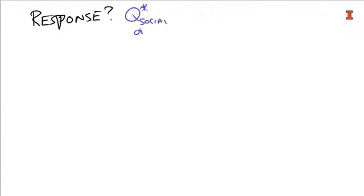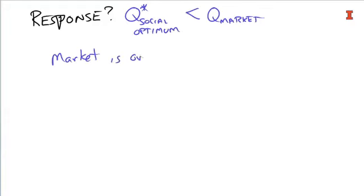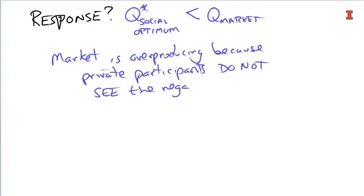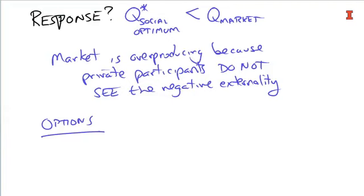We know that Q star sub social optimum, because it's a negative externality, is less than what the market puts out. The market is overproducing, because the private participants do not see the negative externality. The EPA was established so that firms would recognize they can't just use up our scarce air or our scarce rivers.